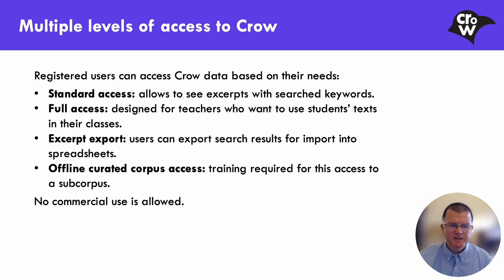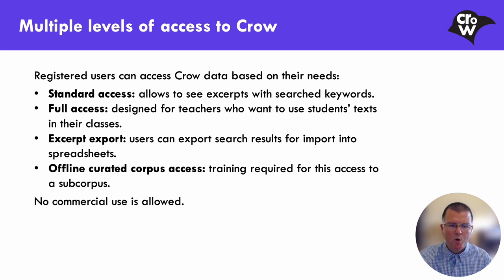To ensure the texts in Crow aren't a target for unethical reuse, we require permission to use Crow. Prospective users provide contact information and a summary of their research and teaching needs. If approved, they are granted one of four levels of access: standard access displays only excerpts of texts; full access allows researchers to see entire texts; export allows search result data to be shared; and offline access allows researchers to download a curated subset of the corpus for use with advanced corpus tools. No commercial use is allowed.